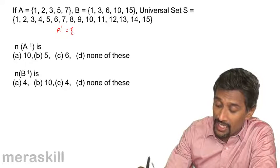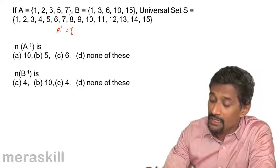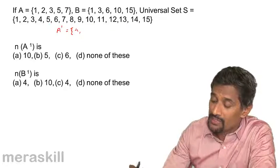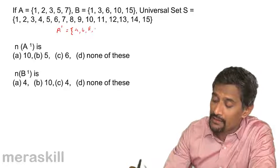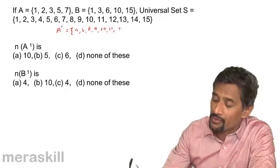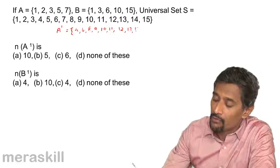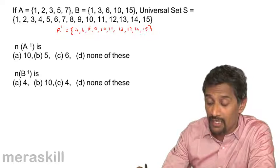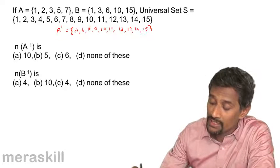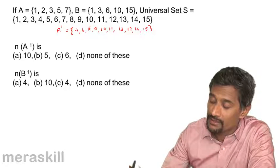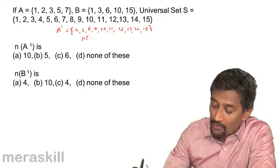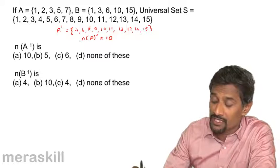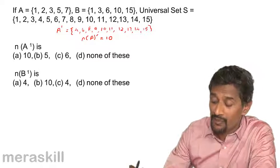So first we need to find A dash. A dash is going to be anything other than 1, 2, 3, 5, 7. So it will be 4, 6, 8, 9, 10, 11, 12, 13, 14 and 15. So all these elements are present in universal set but not in A. So there are 1, 2, 3, 4, 5, 6, 7, 8, 9, 10. So n of A dash is going to be 10. And this is a cardinal number which means the number of elements in A dash.